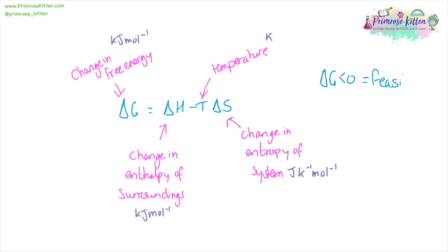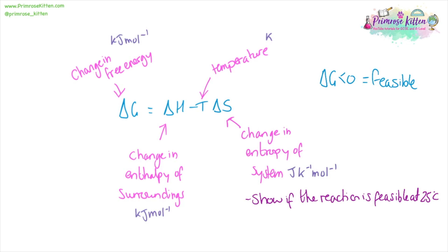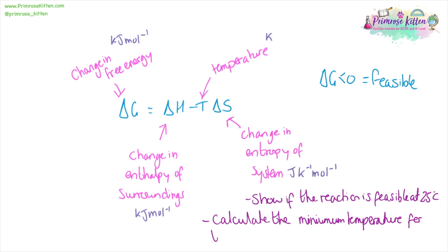If delta G is less than zero or negative, a reaction is going to be feasible. You can get two common questions related to this: you could be asked to show if a reaction is feasible at room temperature, 25 degrees, or any other given temperature; or you can be asked to calculate the temperature at which a reaction becomes feasible. We're going to cover both of these examples in this video.